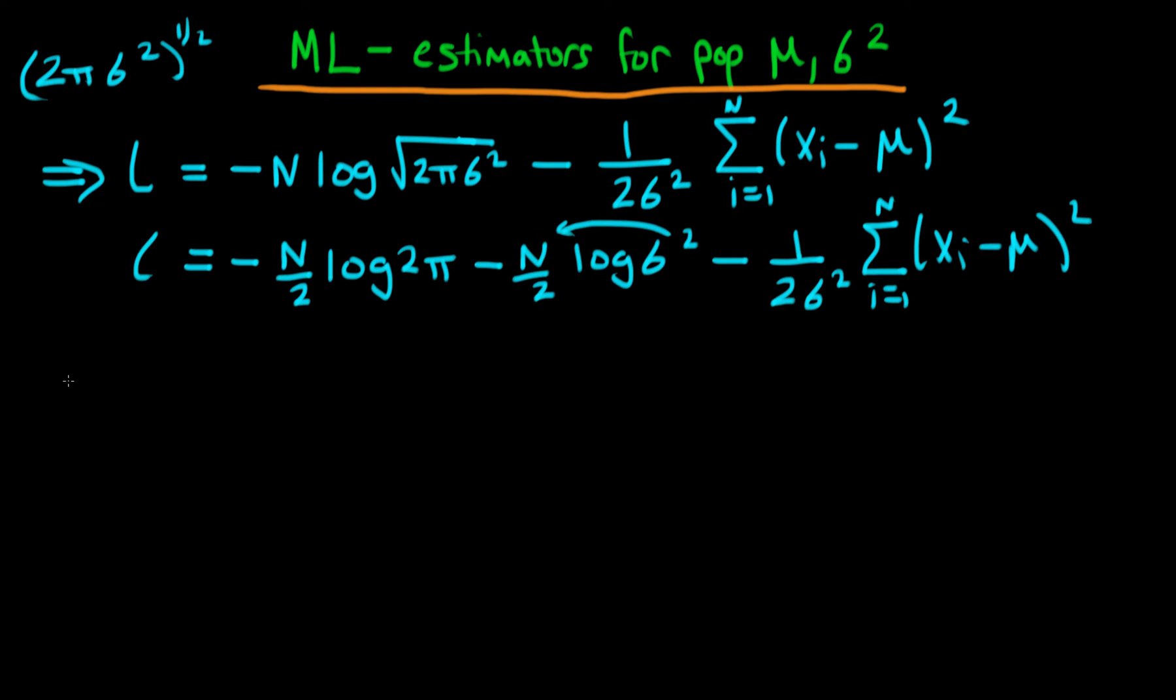So the first parameter we're going to talk about estimating is the population mean mu. So in order to estimate the population mean mu all we need to do is we need to take our log likelihood and differentiate it with respect to the population parameter mu. And if we do that we know that these terms here don't have any mu in it so they're just going to disappear.